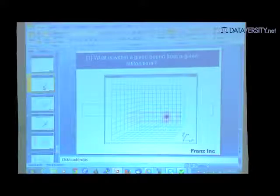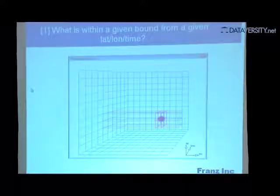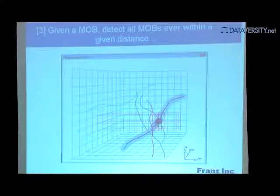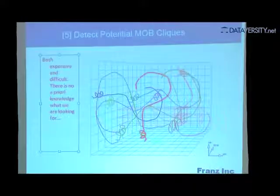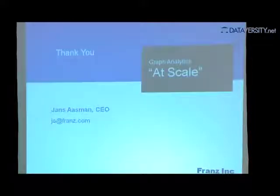We wrote a paper about the performance of this new capability, also available at our booth, and another paper about the complexity and why you need this particular 3D indexing. For example, simpler to do: what is within a given bound from a given lat/long at a given time — just a 3D block, one disk I/O. Harder: detect when two given moving objects are within a given distance — you have to traverse both lines and computation must be fast. Even harder: given a moving object, detect all moving objects ever within a given distance. It's a beautiful paper about the space-time complexity of this kind of search.